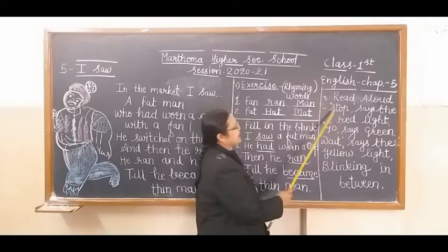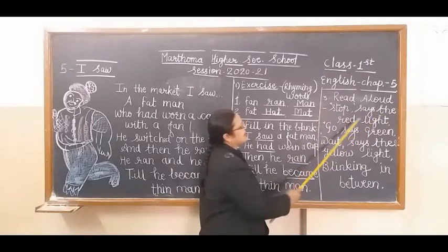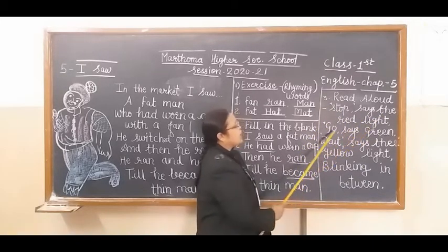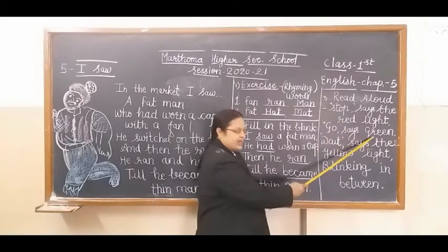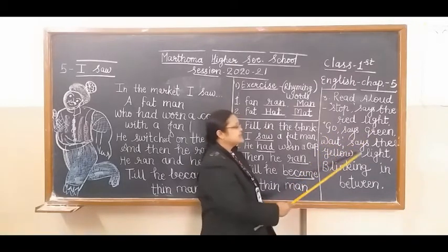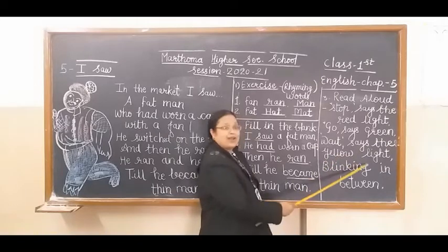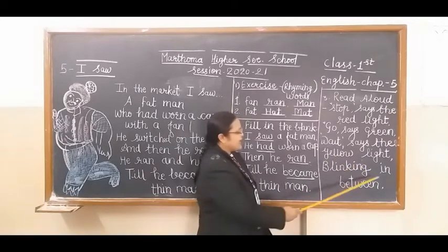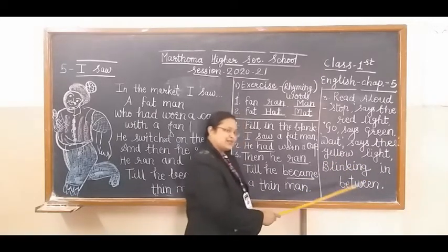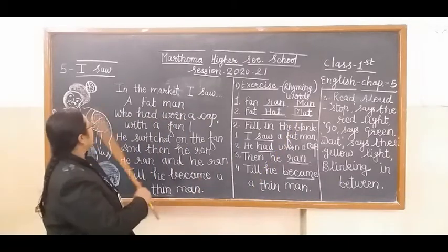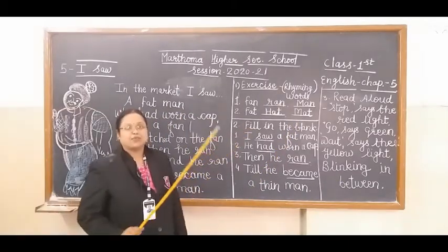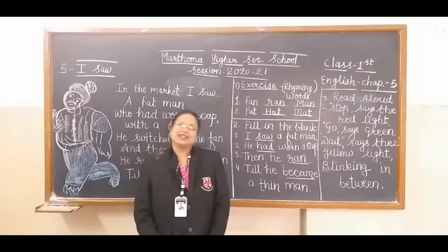Let me read it again. Stop says the red light. Go says green. Wait says the yellow light blinking in between. Okay, students? So enjoy. Enjoy this lesson. Read this poem and learn well. Thank you.